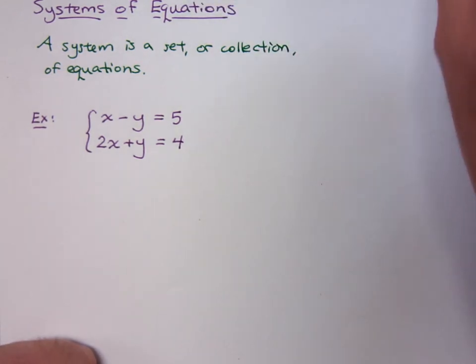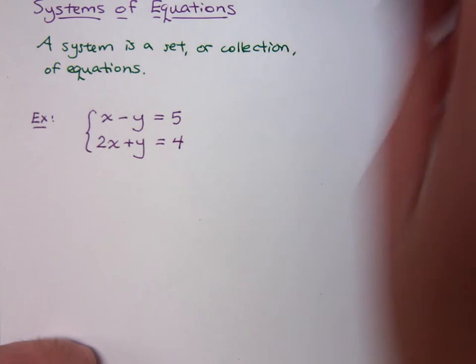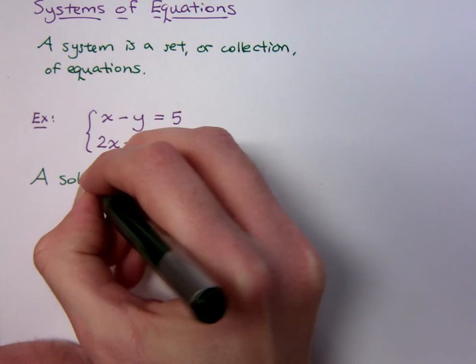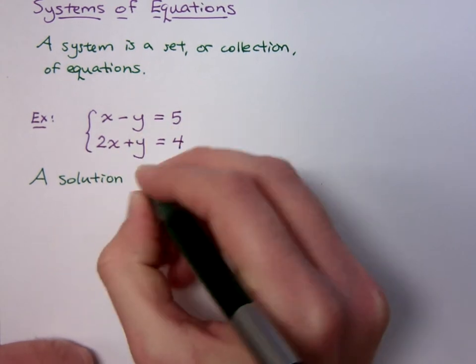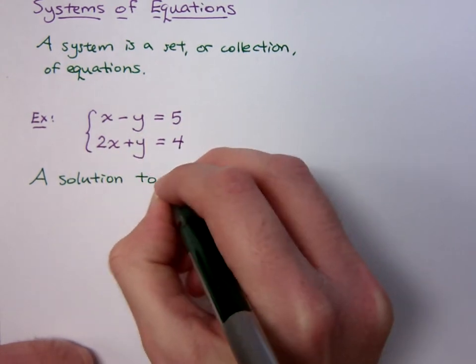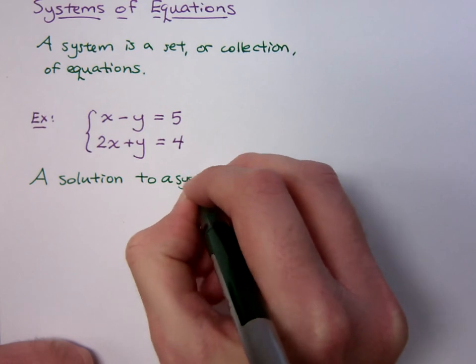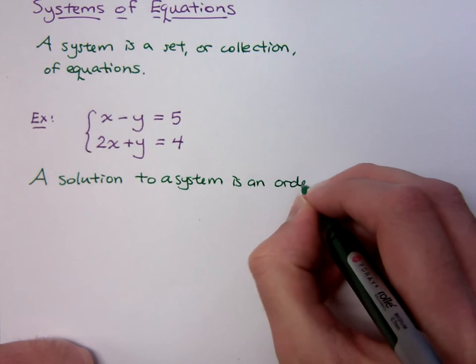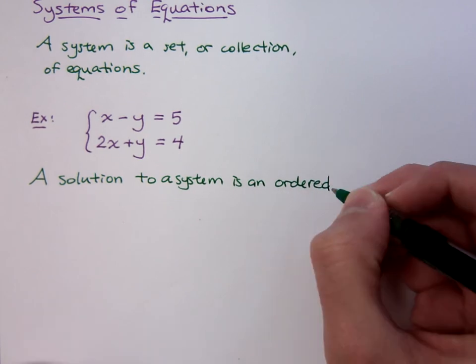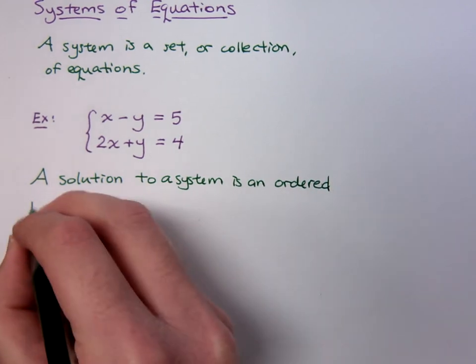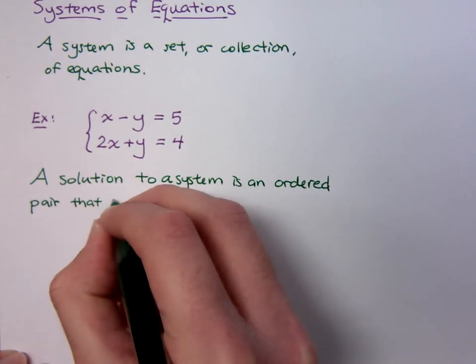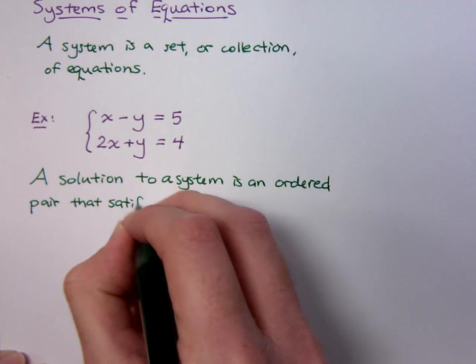Now, we need to understand what it means to be a solution. A solution to a system is an ordered pair that satisfies both equations.